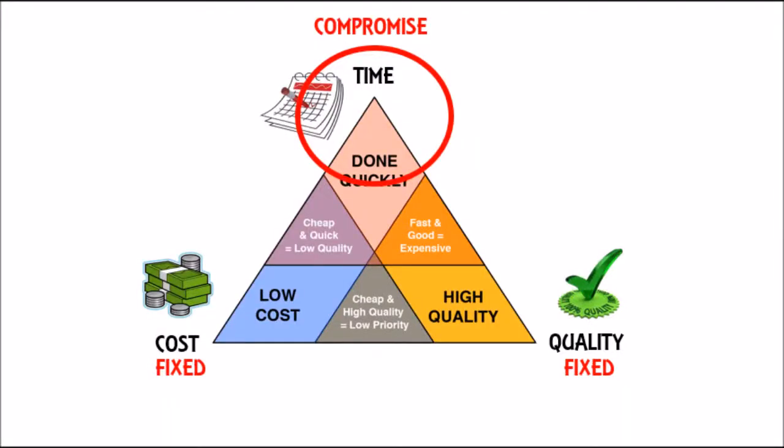You're always having to compromise between the three sides of the project management triangle. If you need to keep cost low but still need high quality, that's going to take time — the project schedule will move out because you've got five people trying to do the job of ten. If you want to keep the price low and get it done quickly, you're almost certainly going to be compromising on quality.